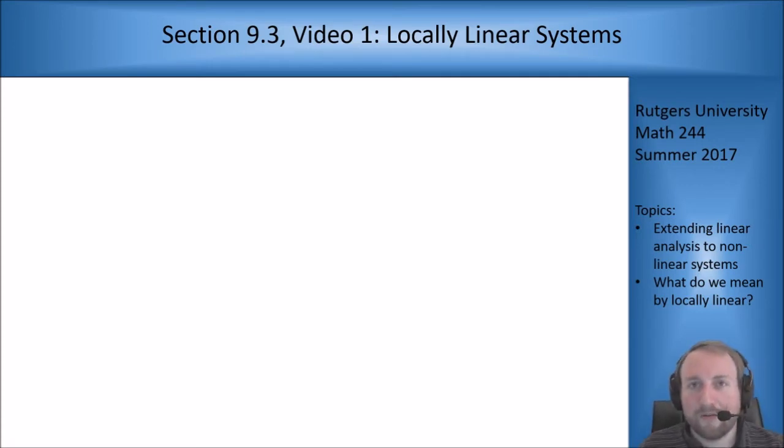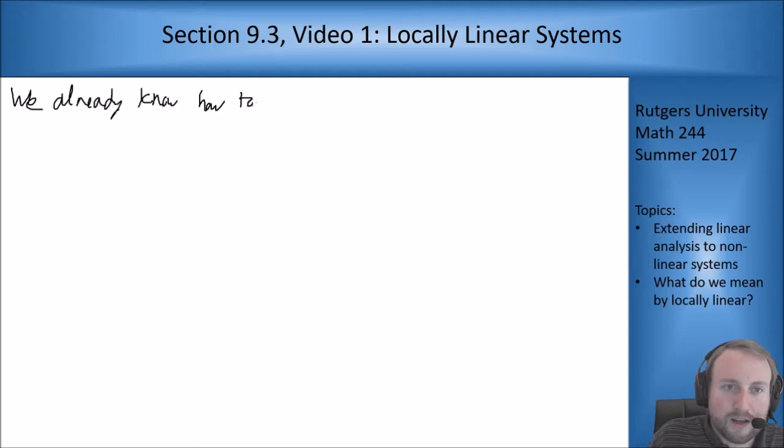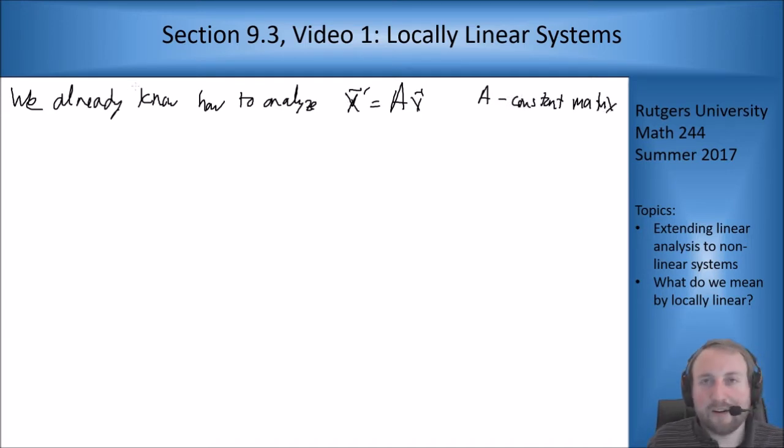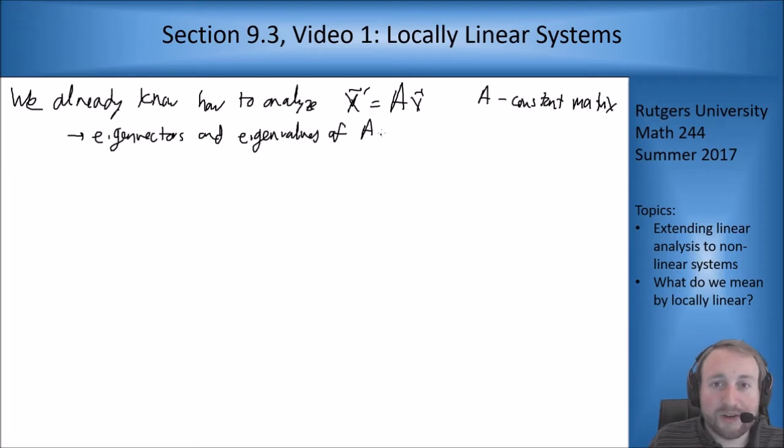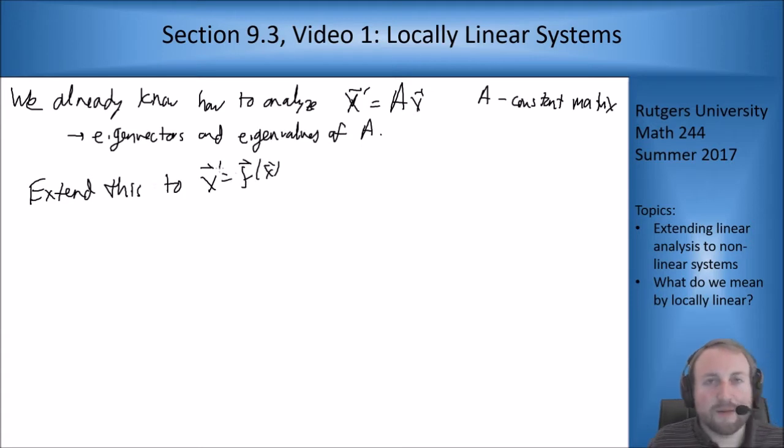Chapter 7 was all about analyzing the constant coefficient matrix version of this autonomous system. So we already know how to analyze x vector prime equals A times x where A is a constant matrix. This depends on the eigenvectors and eigenvalues of A. Now our goal is to extend this sort of logic to non-linear autonomous systems.